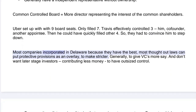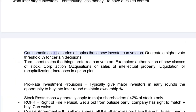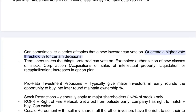Most companies are incorporated in Delaware because it has the best and most thoroughly developed corporate laws. You can put protective provisions as an overlay to make governance stricter, generally to give VCs more say. You also don't want later-stage investors contributing less money to have outsized control, so you can sometimes list specific topics that a new investor can vote on, or create a higher vote threshold for certain decisions.